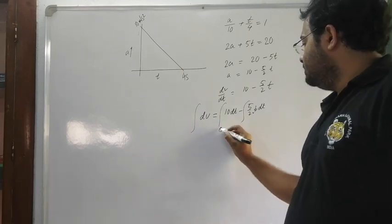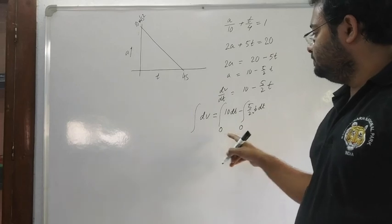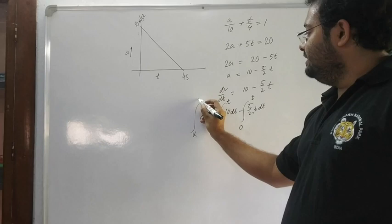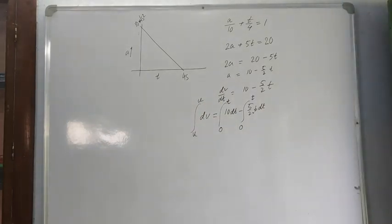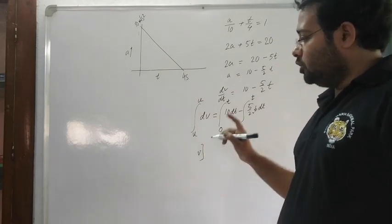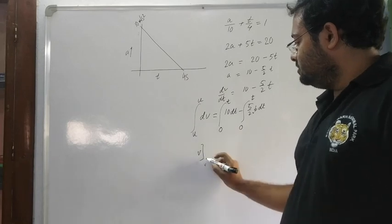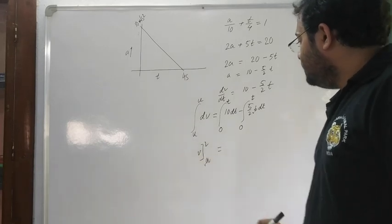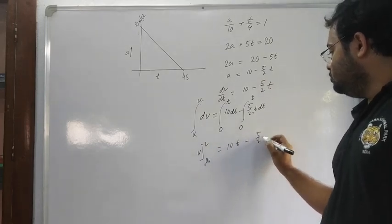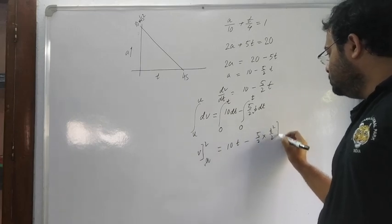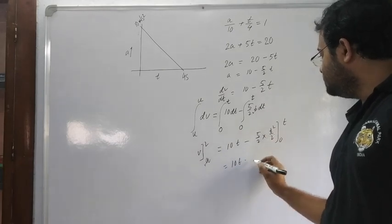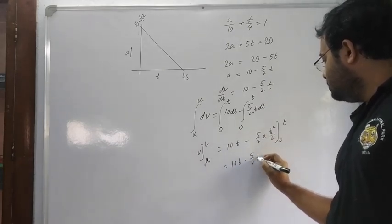Integrating with limits: at time 0 initial velocity is u, and at time t velocity becomes u again. So integral from u to u of dv equals 0, giving 0 equals 10t minus 5 by 4 t squared.